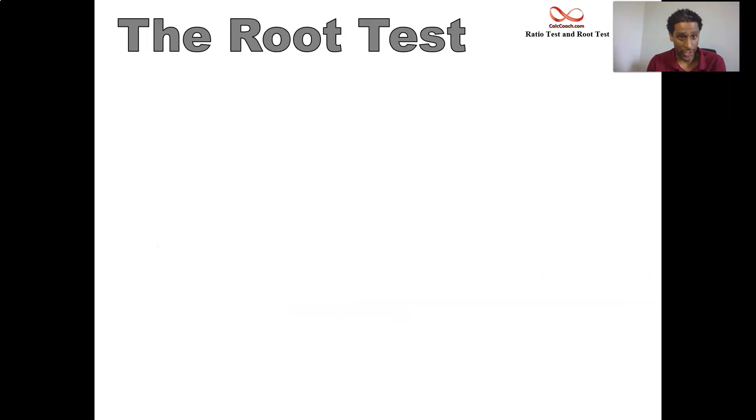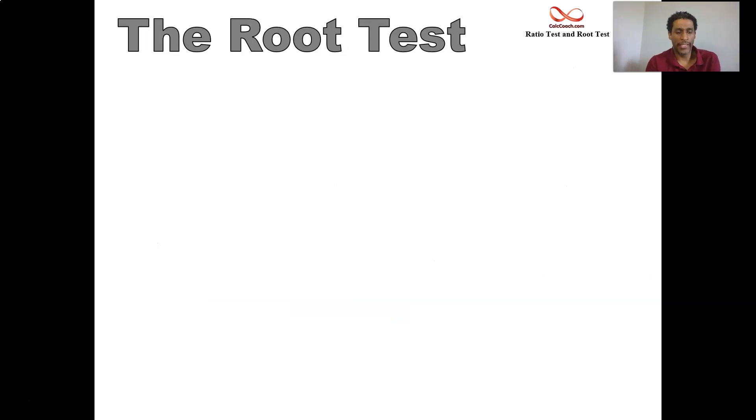It has a partner called the root test. The root test has the same conclusions as the ratio test. It's just based off of a different limit. If your terms inside of your series, your a sub n terms, if they form a sequence that you could find this limit for, then based on the value of this limit, you'll have the same response that you had for the ratio test.